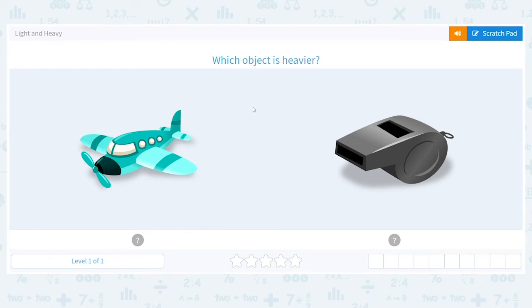Hello, today we are going to be talking about weight and we will be comparing objects to see which is heavier and which is lighter. So on the first question we see an airplane and we see a whistle.